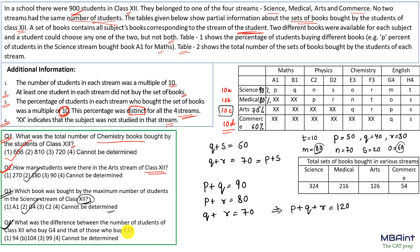Question four asks for the difference between the number of students who bought G4 and those who bought E3. We know M = 80% and the other percentage values. The total number of students in science is 10A = 360. So 80% of 360 gives the absolute number for G4. Similarly find the absolute number for E3, then compute the difference. Hope the concept is very clear. Thank you.